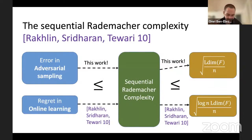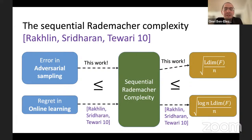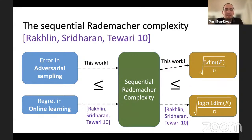Both the error in adversarial sampling and the regret in online learning are bounded as a function of a quantity called the sequential Rademacher complexity. This is one of the contributions of the second work — tighter bounds on the sequential Rademacher complexity, which yield tighter bounds on regret in online learning. Now I want to talk about proofs and techniques. There is a table of results and techniques. The first two techniques are easier to follow, and I hope to convey the key ideas. The last two rows are more technically involved and I'll give a high-level picture.